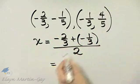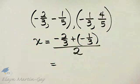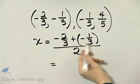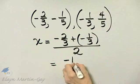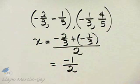So what is that? Negative 2 thirds plus negative 1 third, that's negative 3 thirds, or negative 1, divided by 2. That is the x value of the midpoint.